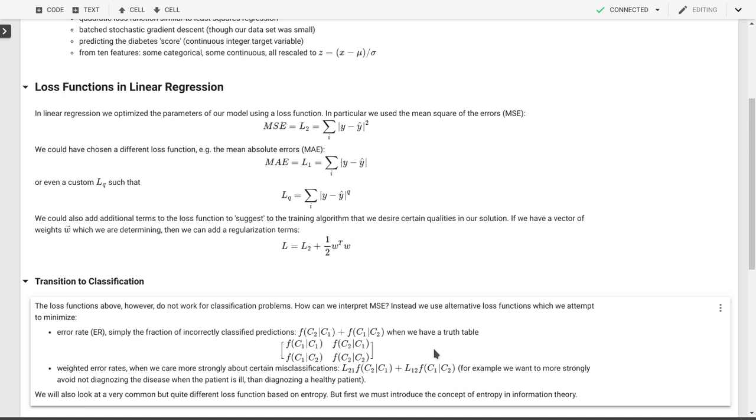So the other thing we'll look at as a loss function which I have not listed here is based on entropy. That is actually going to be the major loss function that we'll cover. But to be able to understand that entropy or cross entropy loss function, you'll have to first understand what entropy is in the context of information theory. I'll talk about that next.